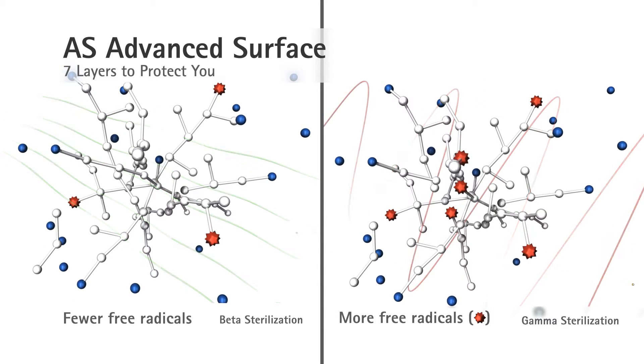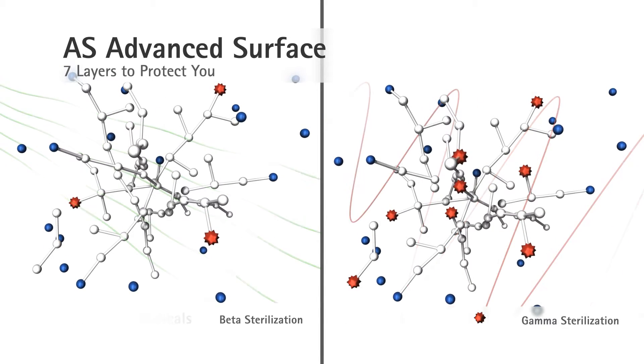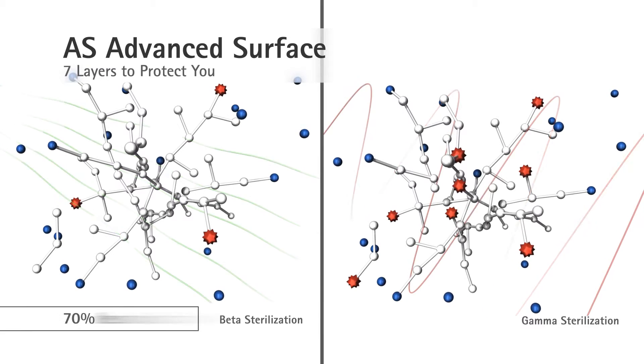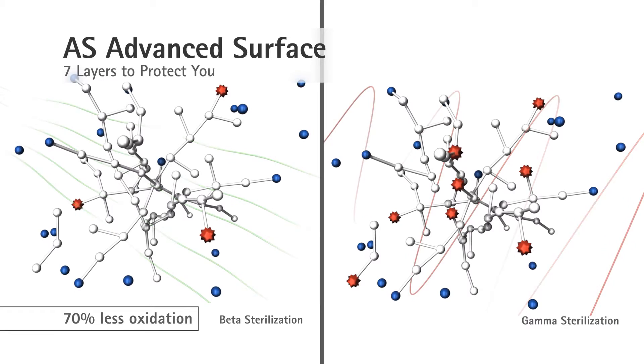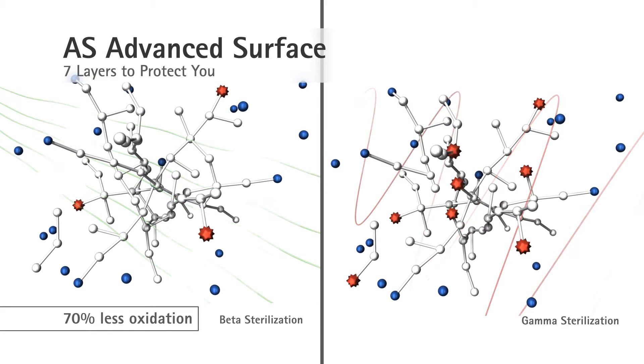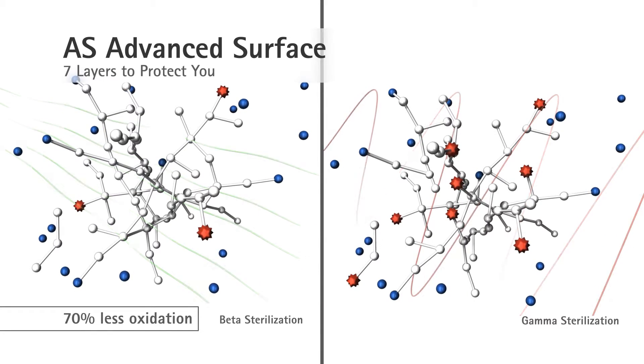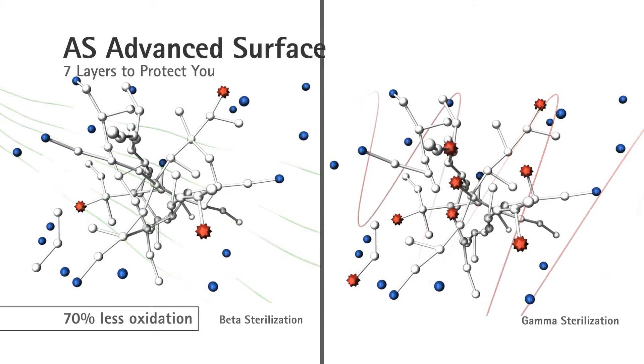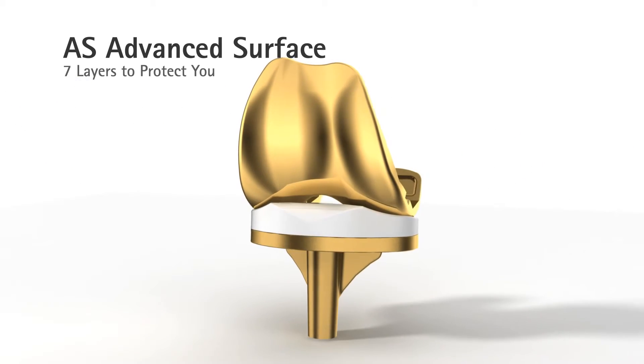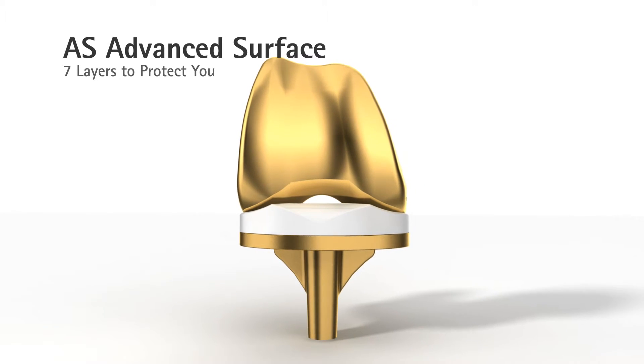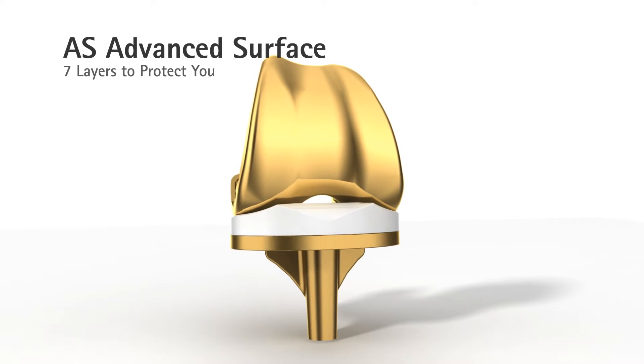Laboratory tests comparing beta and gamma sterilization found 70% less oxidation in polyethylenes sterilized using beta sterilization. Better long-term results can be expected from this combination of reduced abrasion and improved oxidation resistance.